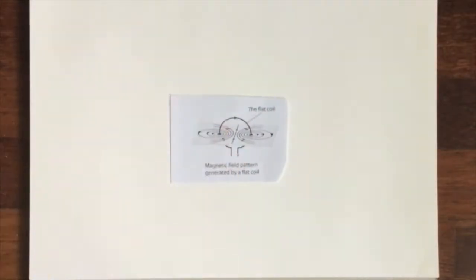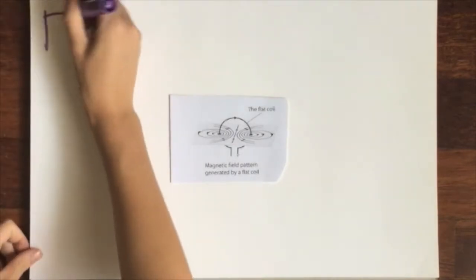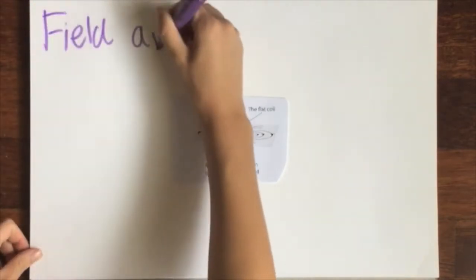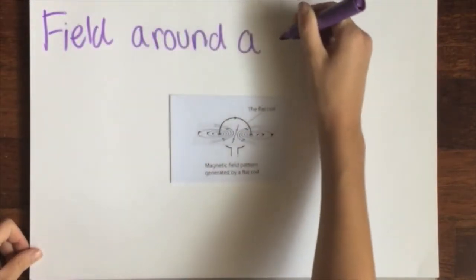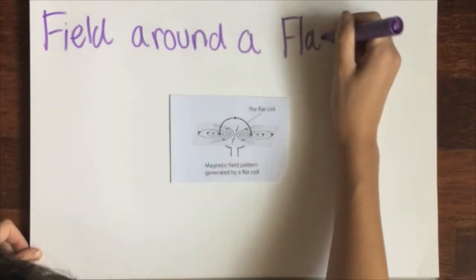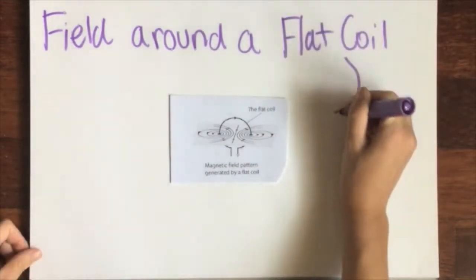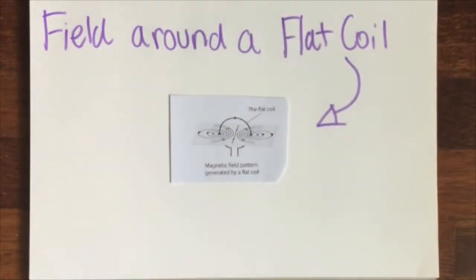This is the field around a coiled wire. When a current flows in a magnetic field, a wire will experience a force upon it. The force, current, and field are each perpendicular to one another.